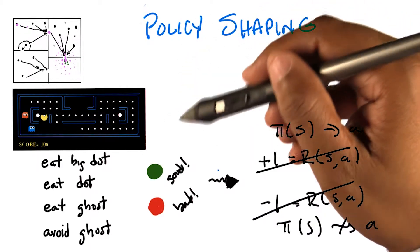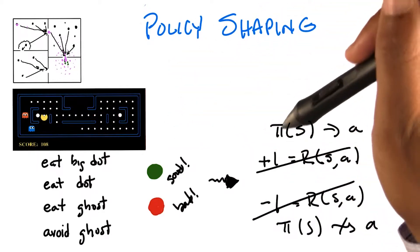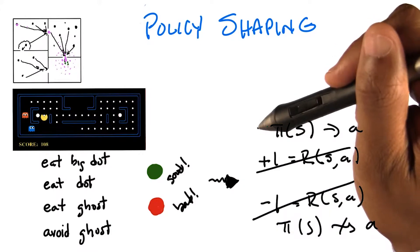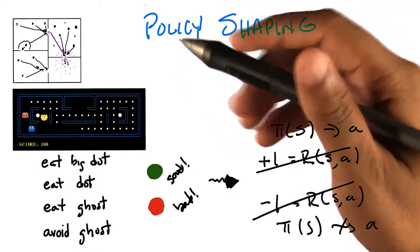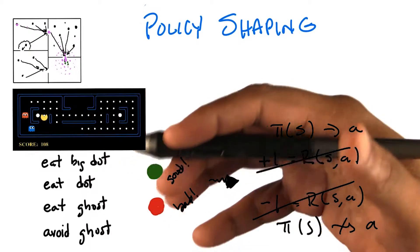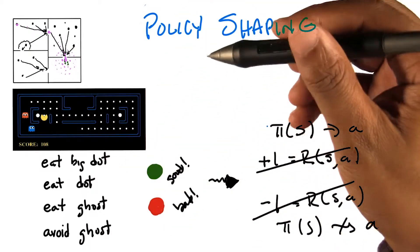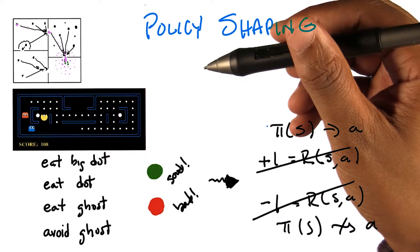And it's really a very simple idea. It's sort of what I just described, that what human beings are actually doing is giving you direct policy advice. So they're trying to shape what the policy should be directly, as opposed to trying to say something about what rewards ought to be. Does that make sense?